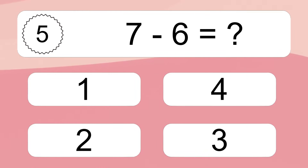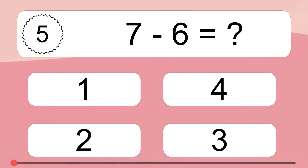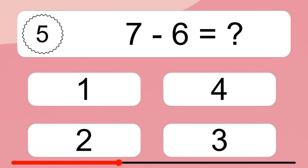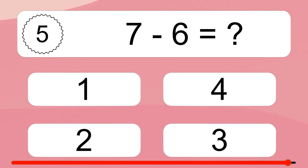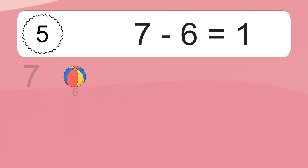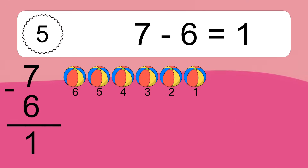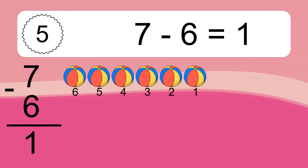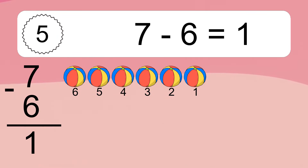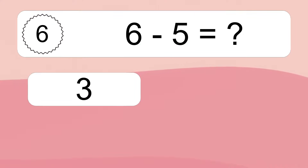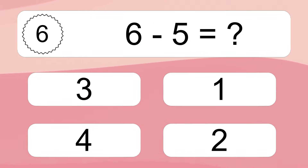7 minus 6 equals what? 7 minus 6 equals 1. Let's count it: 6, 5, 4, 3, 2, 1.